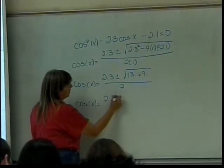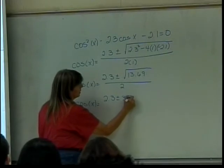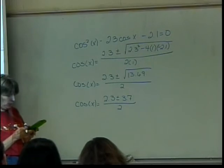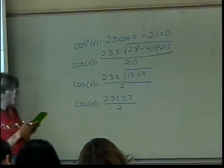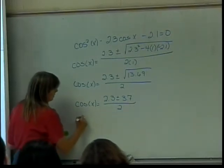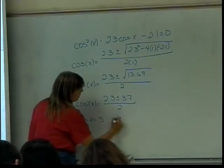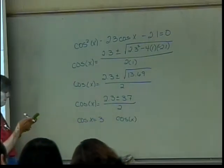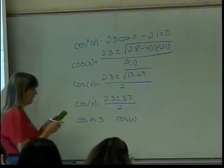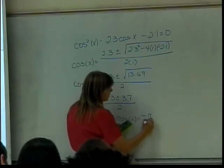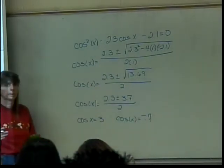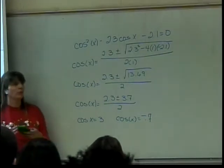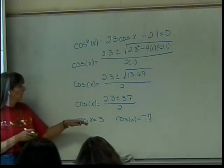So I'll have 2.3 plus or minus 3.7 divided by 2. When I do the plus one, I get that the cosine of x equals 3. When I do the minus one, I get that the cosine of x is equal to negative 0.7. Sorry, I was wrong, it's not a nice number. Some people's it is. Wasn't yours? Oh, yours was nice. Yours came out to be a half. Mine isn't.